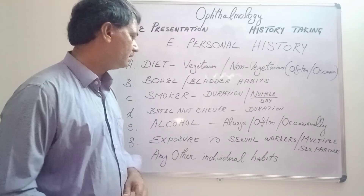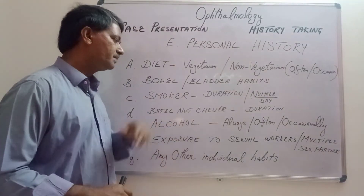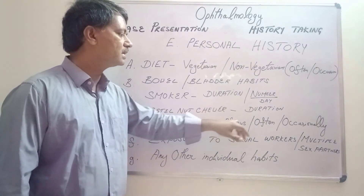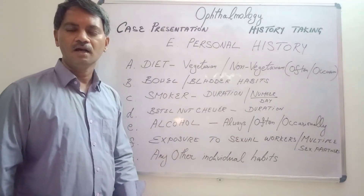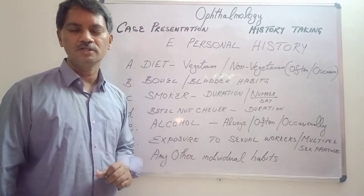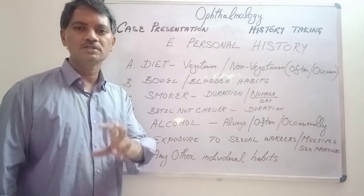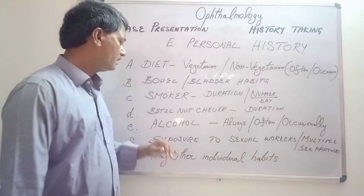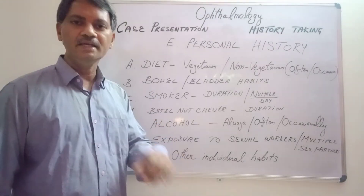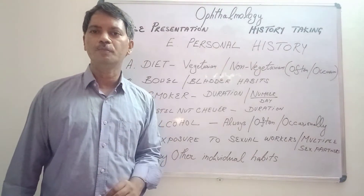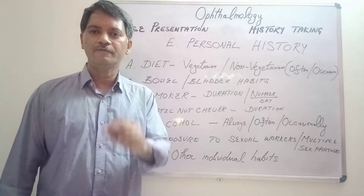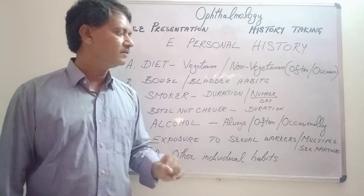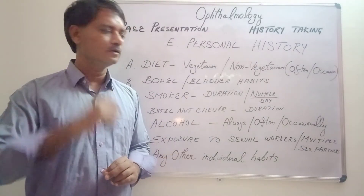Whatever it may be, for a person who is consuming alcohol, you should ask them how long they have been consuming alcohol and how much alcohol they consume every day. Once again, alcohol can lead to toxic amblyopia — it may affect the optic nerve in the patient — and that will help you in coming to a diagnosis.